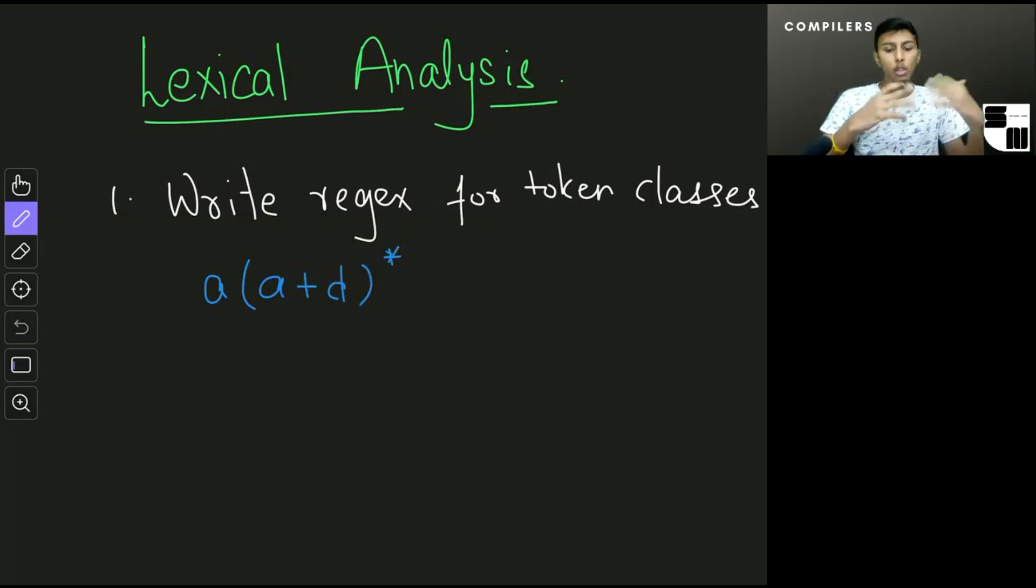So this is the regular expression for identifiers. And for integers we could just have digit plus, we need at least one digit. So similarly we can write regular expressions for each of the token classes.